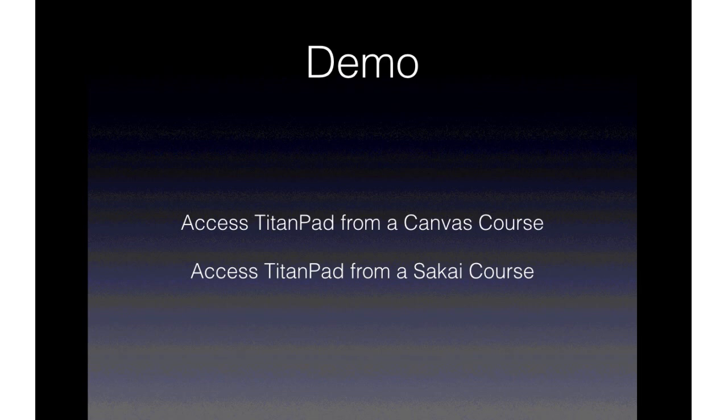These LTI tools can do a lot more things than what I just showed — some of them can interact with grading, rosters, and things like that. I don't have anything that fancy to show today because in this particular situation, Sakai pretty much works the same way as Canvas. I don't really see Canvas as having any sort of advantage in this case.